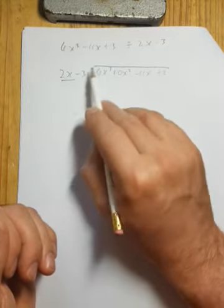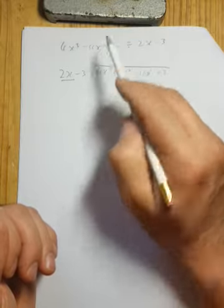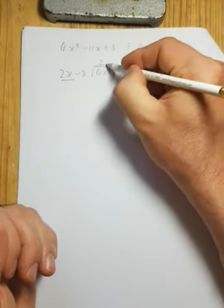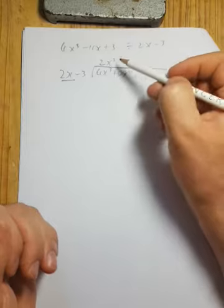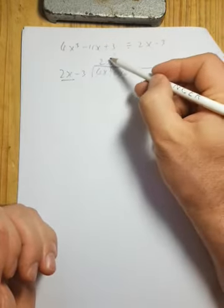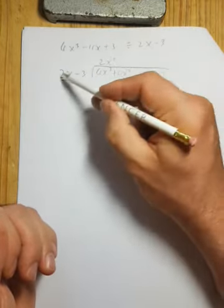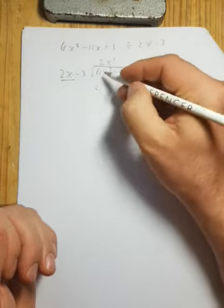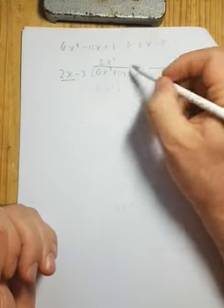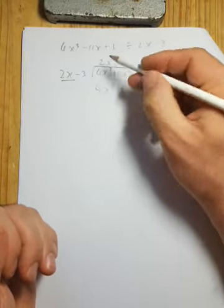Step one, divide this term into this. So 2 into 4 goes twice, x into x cubed is x squared. Step two, multiply the divisor by this term here. 2 by 2 is 4, x squared by x is x cubed. 2 by minus 3 is minus 6, x squared.